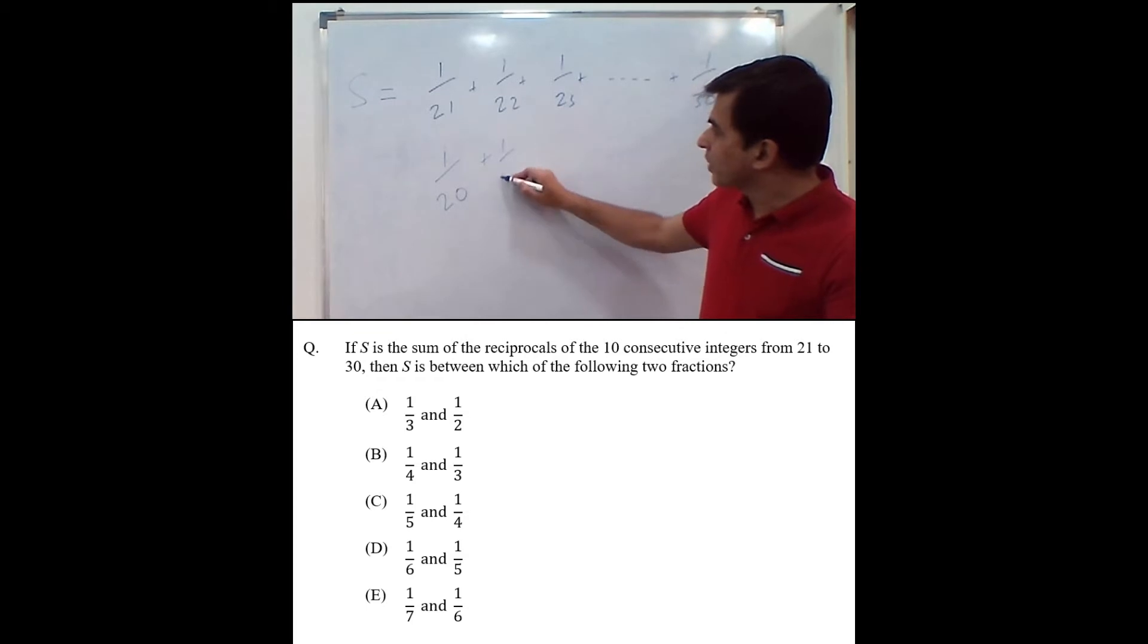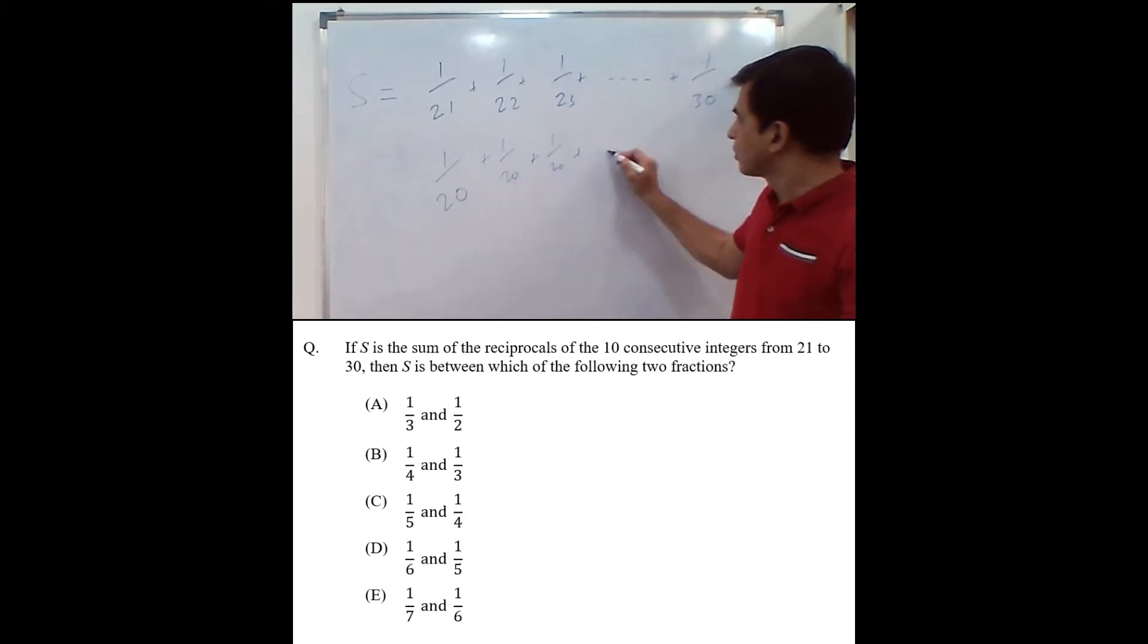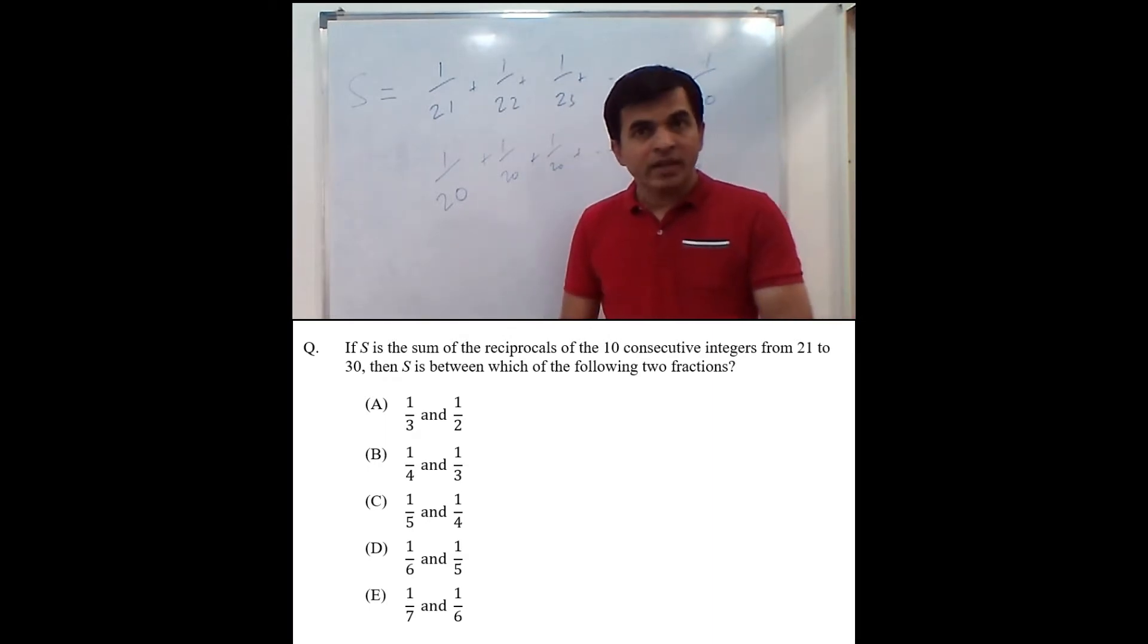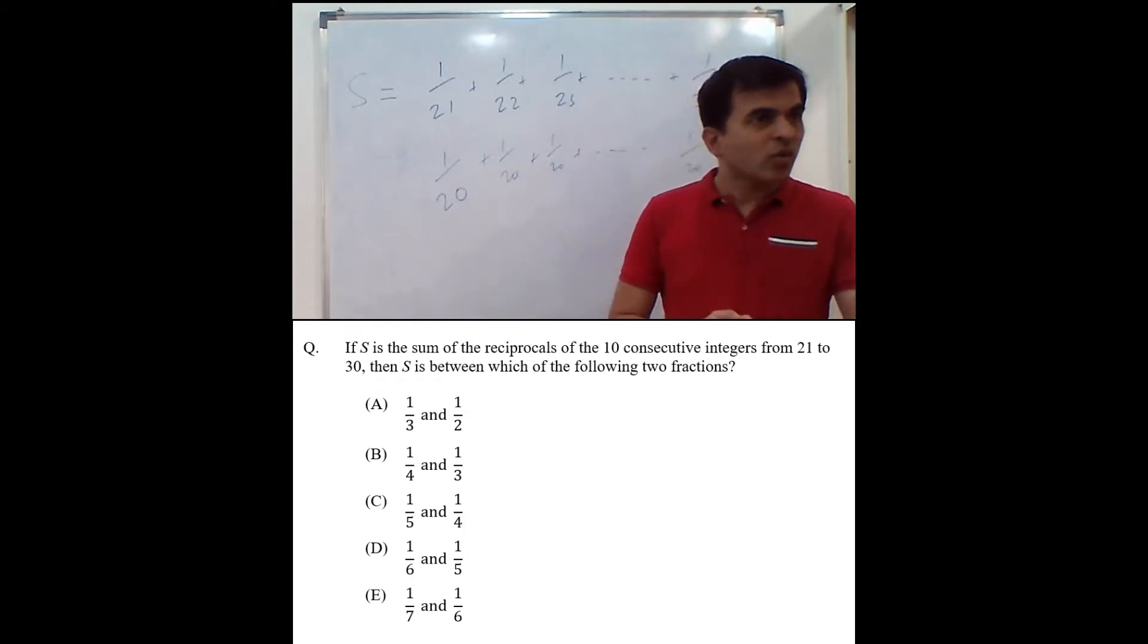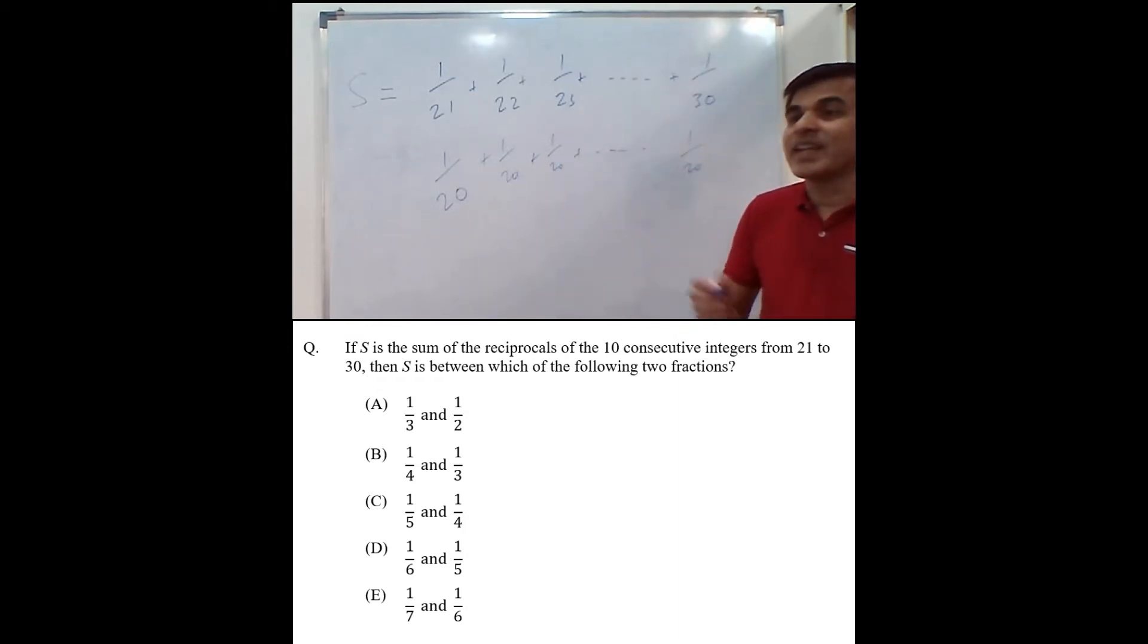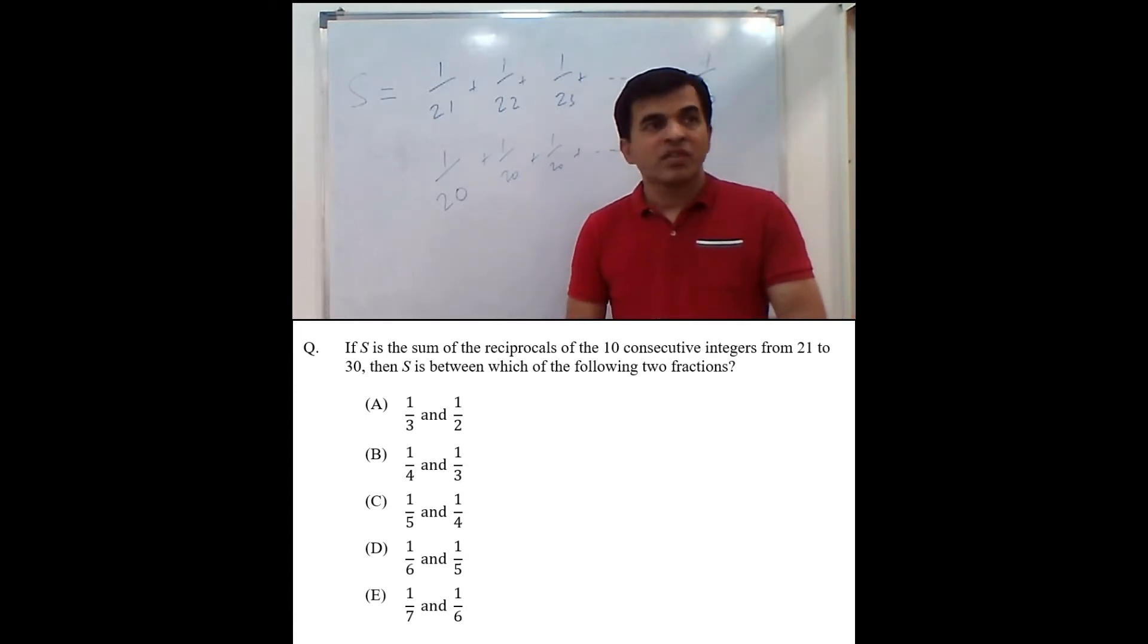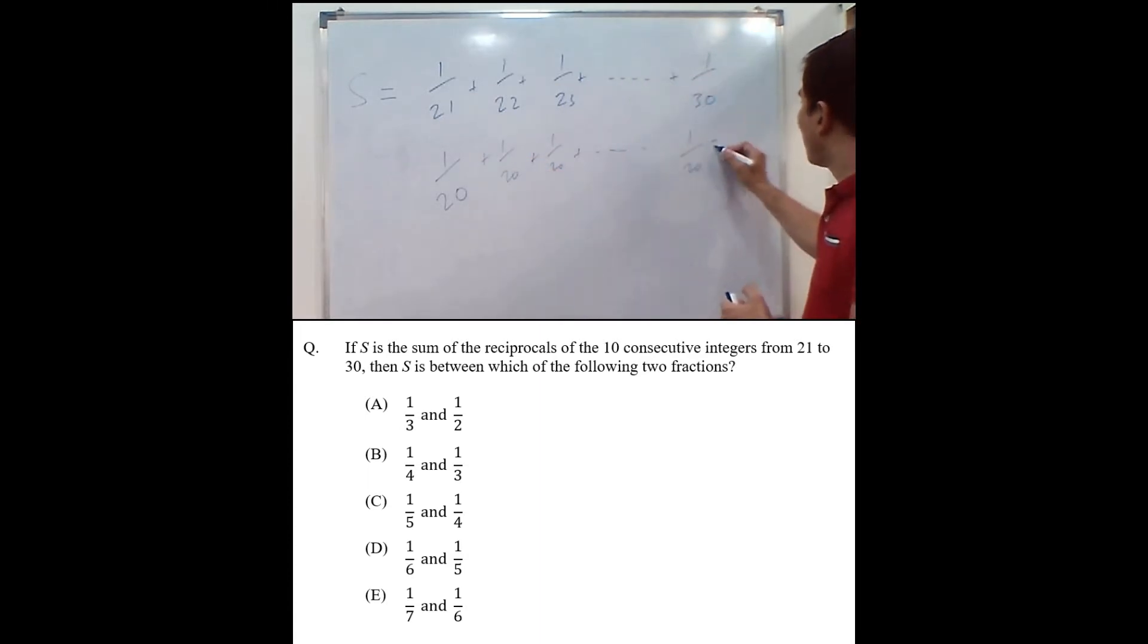In other words, if I had something like this given to me, then this total is very easy to compute. Because 1 over 20, 10 times means 10 over 20 which is half. So this is giving me the value half.